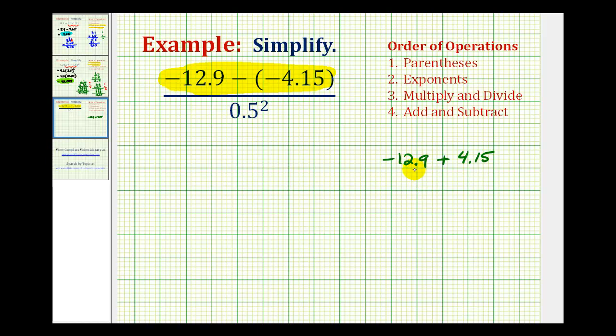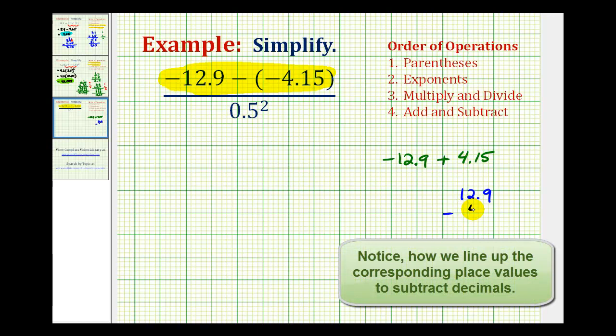We'll be subtracting the smaller absolute value from the larger absolute value. So notice that negative 12.9 is going to have the larger absolute value. That would be positive 12.9, so we're going to have positive 12.9 minus the absolute value of 4.15, which is just 4.15. So now we'll determine this difference, but again, we know that the result of this sum has to be negative.